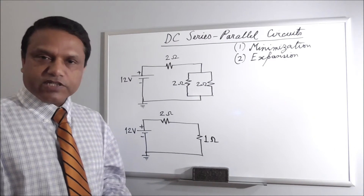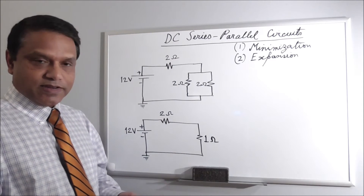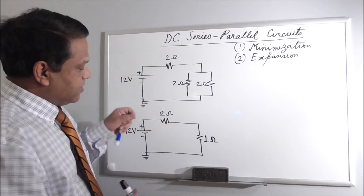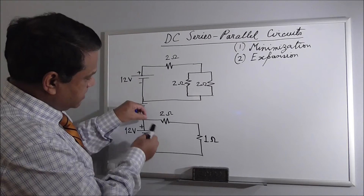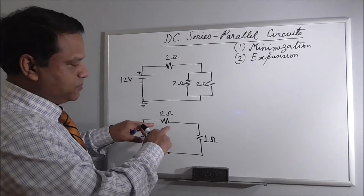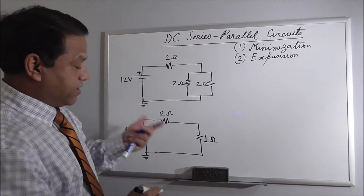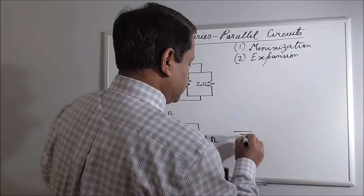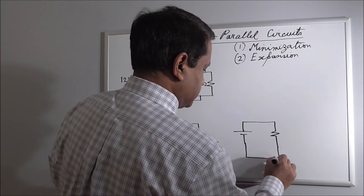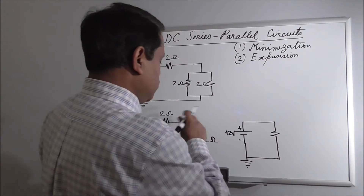Now that the parallel pair is replaced by 1 ohm, the circuit has become a simple series circuit. The total resistance is 2 ohms plus 1 ohm equals 3 ohms. We can draw the final minimized version as a 12-volt source with a single 3-ohm resistor. This completes our minimization.